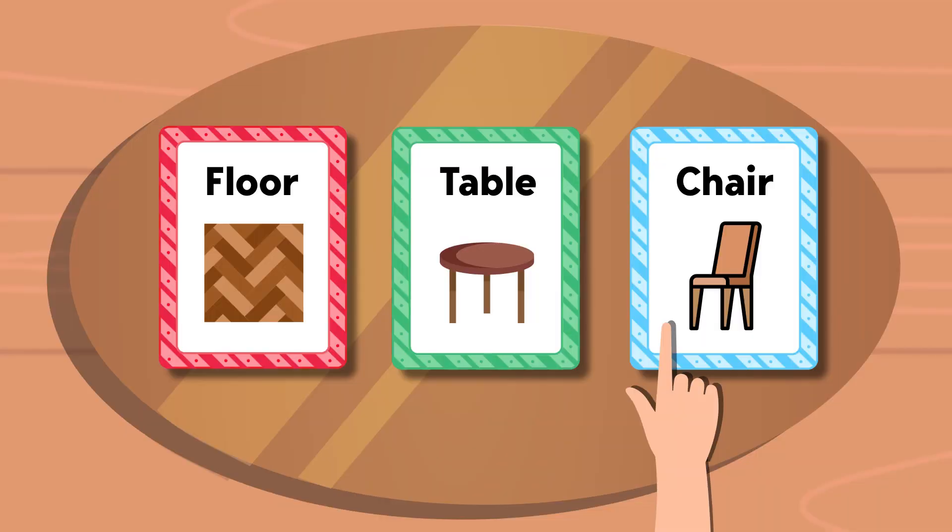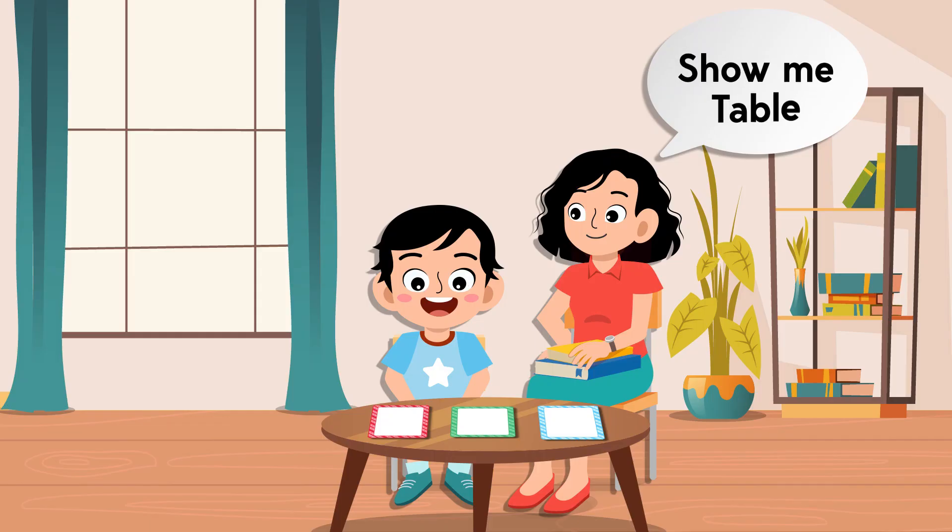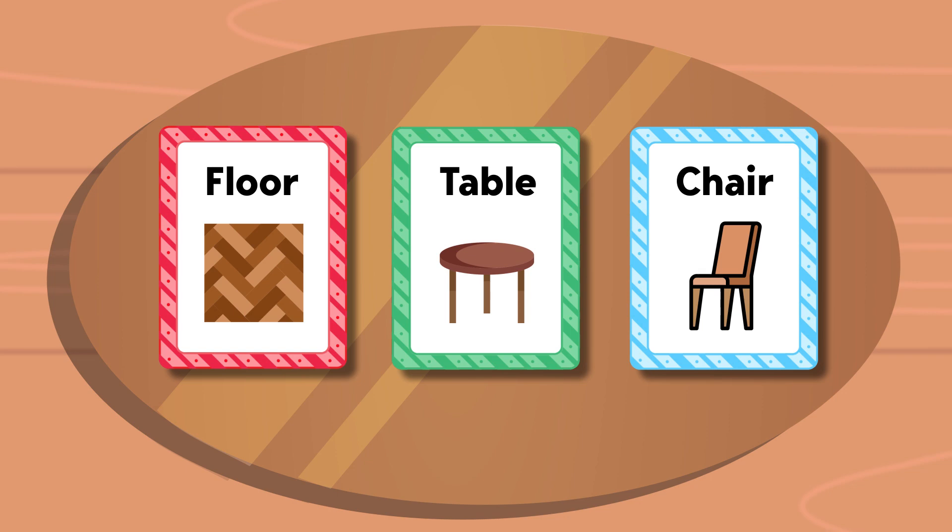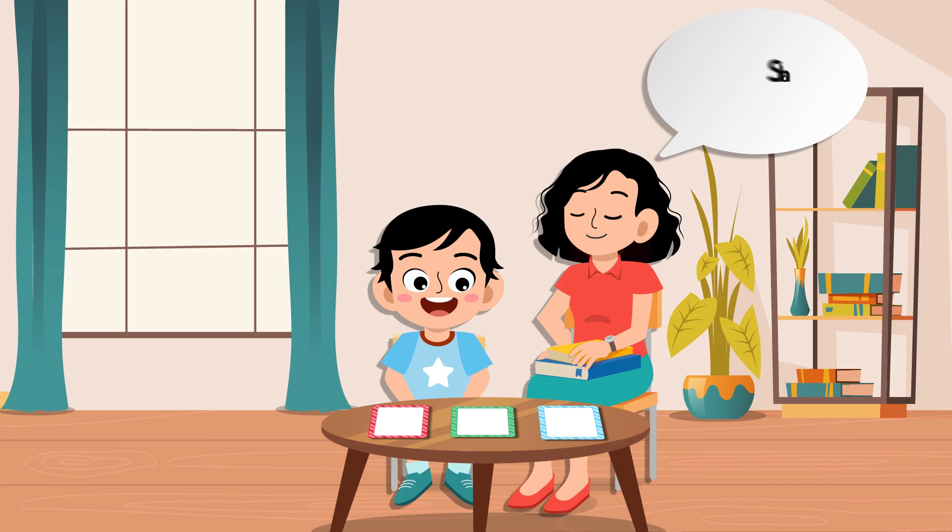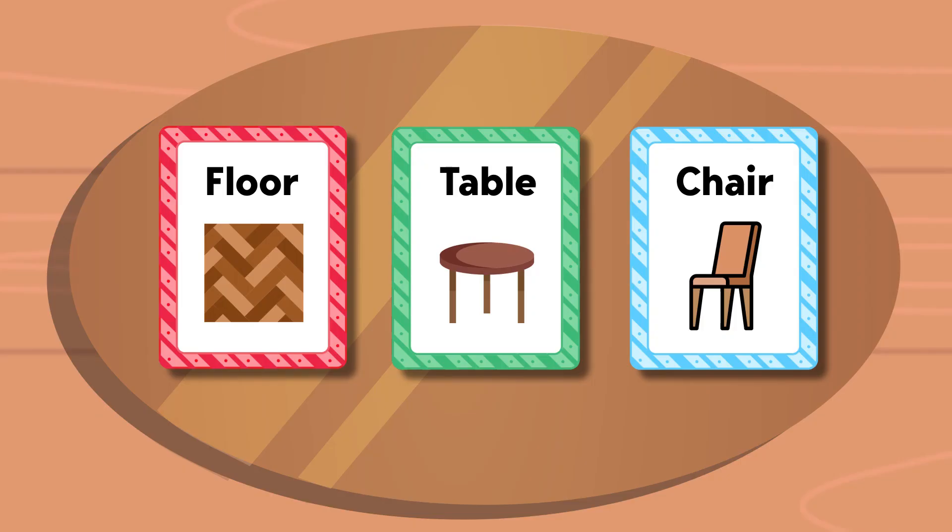Move on to the next one and give the instruction 'show me table,' and if the child responds correctly, socially reinforce and give the instruction for the next flashcard, 'show me floor.' If the child does not respond correctly, repeat the instruction and physically prompt the child to point to the flashcard.